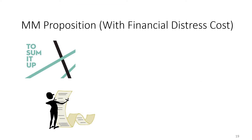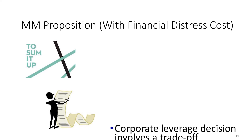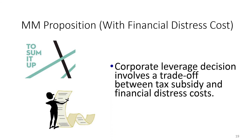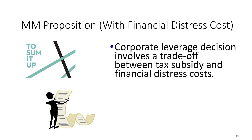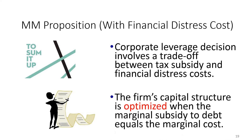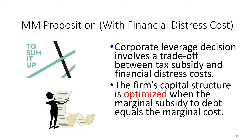Let's sum up what we have learned. Corporate leverage decisions involve a trade-off between tax subsidy and financial distress costs. The higher the leverage, the higher the benefit from the tax shield — but also the higher the disadvantages of financial distress costs. Therefore, the firm's capital structure is optimized when the marginal subsidy to debt equals the marginal cost. A financial manager should understand this and try to strike a balance between debt and equity financing.